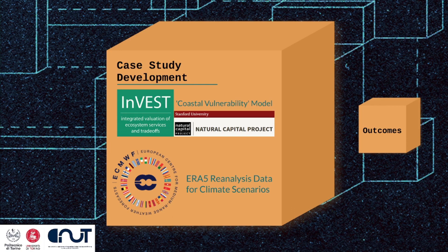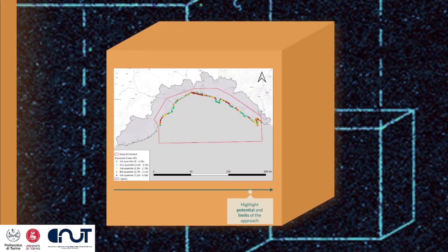In our case study, we were particularly interested in understanding whether this type of model was suitable to analyse the impact of different underlying climate patterns in determining local flood hazards. For this reason, we used the ECMWF's ERA5 reanalysis data on wind speed and derived wave power to create climate scenarios and compare the model outputs. By applying this model to our area of interest in Liguria, we were able to obtain a preliminary exposure map for this large stretch of coastline, and most importantly, to highlight the potential and limitations of this approach when it comes to our research objectives.